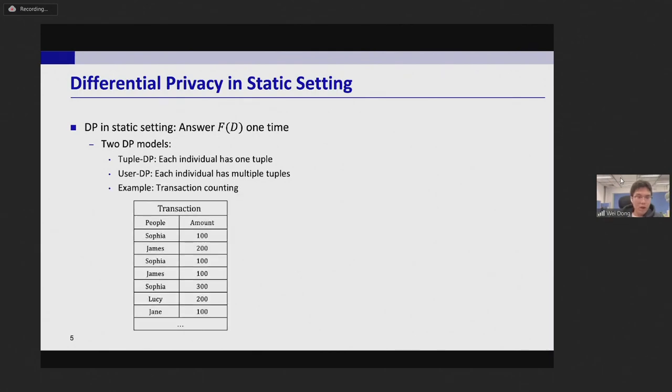Let me give the transaction counting as an example. Under tuple-DP we protect the privacy of transactions, and in this setting adding Laplace noise with scale proportional to one over epsilon is enough. And here we only require constant noise.